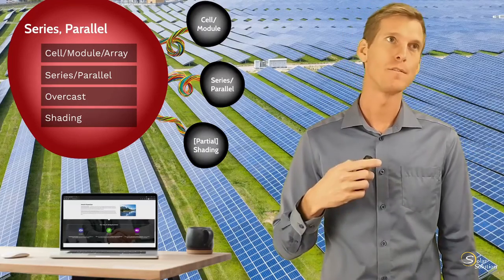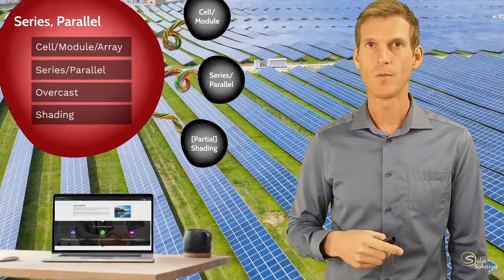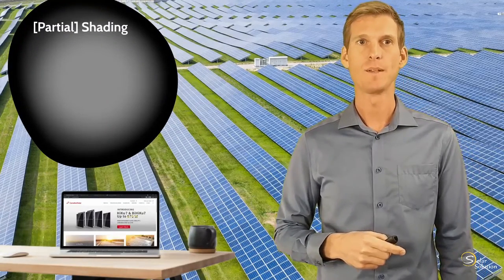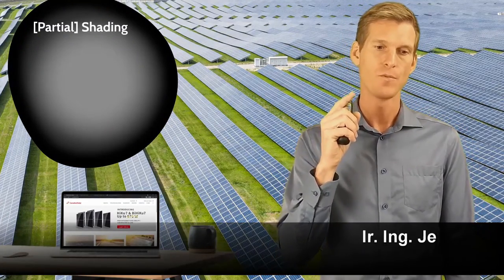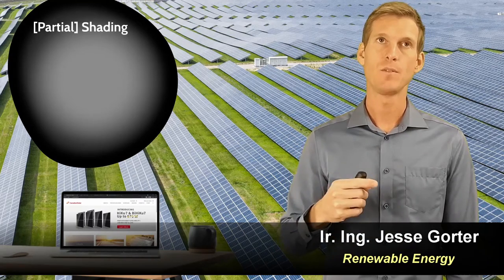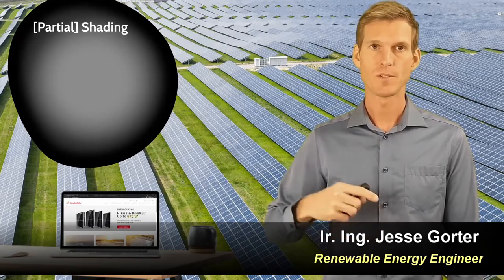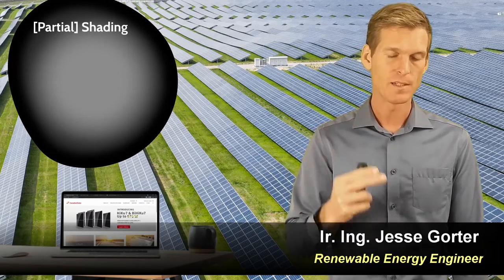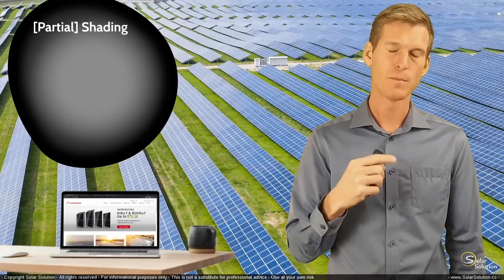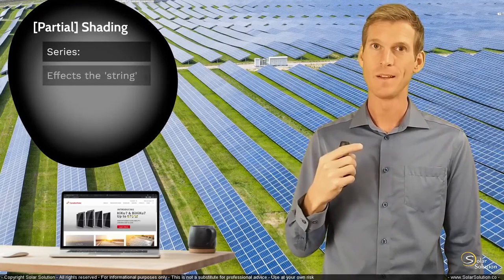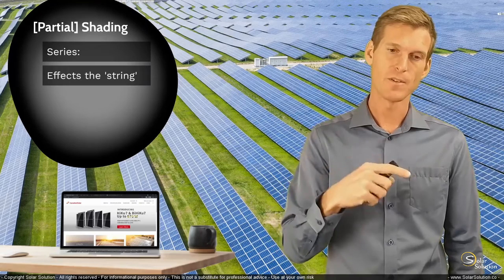I just gave you a refresher on the difference between series and parallel wiring for the purpose of explaining partial shading properly. If you connect your cells or panels in series and you have partial shading or malfunctioning of one of the cells or panels in the complete string, then the negative impact of this shading or damage impacts the complete string.